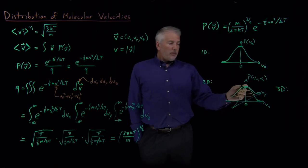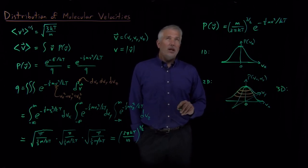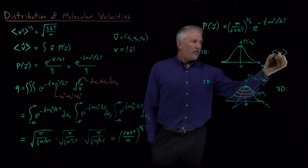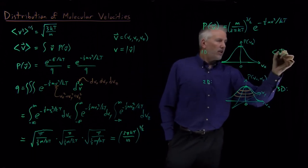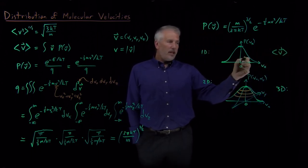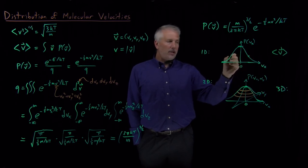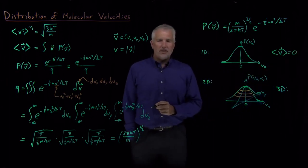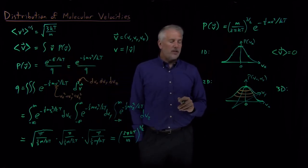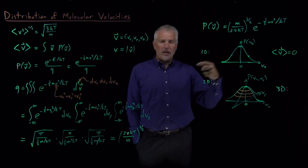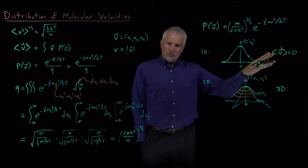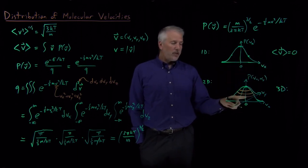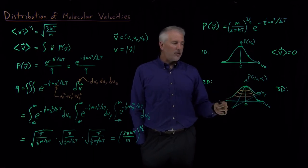The most probable velocity is that the molecule is stationary — and the average velocity is also zero. Because there's equal probability of moving 100 meters per second to the left and 100 meters per second to the right, the two sides cancel. The symmetry of the distribution means the average velocity is zero. This isn't surprising once we recognize it's the question we asked: average velocity has direction, and the directions cancel in all three dimensions.